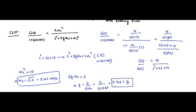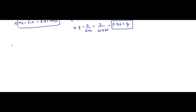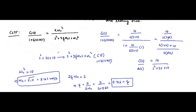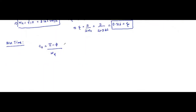Now we calculate rise time — the time taken for the output response to reach 100% of the steady state value. Rise time = (π − φ) / ωd. To find φ, we draw a right-angle triangle where the angle φ corresponds to the damping components: ζωn, ωd = ωn√(1−ζ²), and ωn as the hypotenuse.